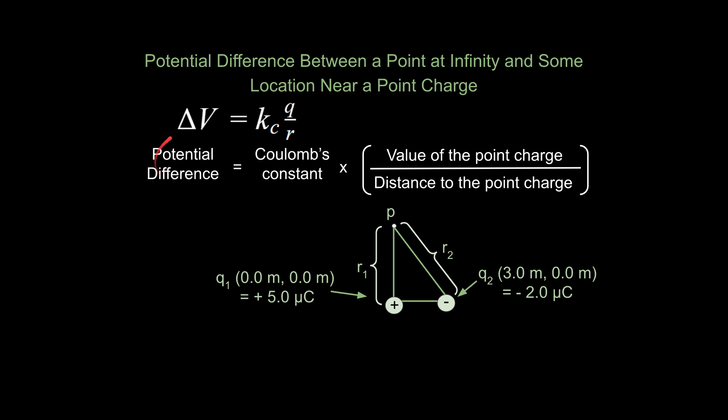This is the more commonly used form of the equation right here. Potential difference is equal to Kc, so that's Coulomb's constant, times the value of the point charge, divided by the distance to the point charge. This is very similar to when we learned about electric fields. You're talking about a point in space and its potential difference between that point and infinity. So between that point and all the way out to infinity, you could say, what is its potential difference at that location? And that's how you would go about using this equation.